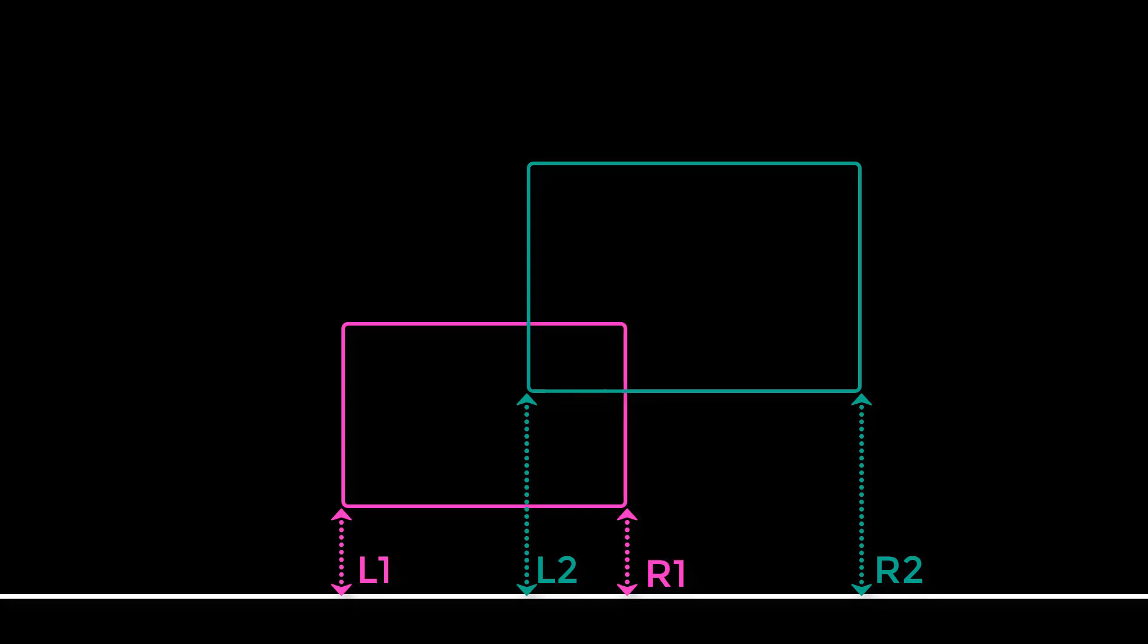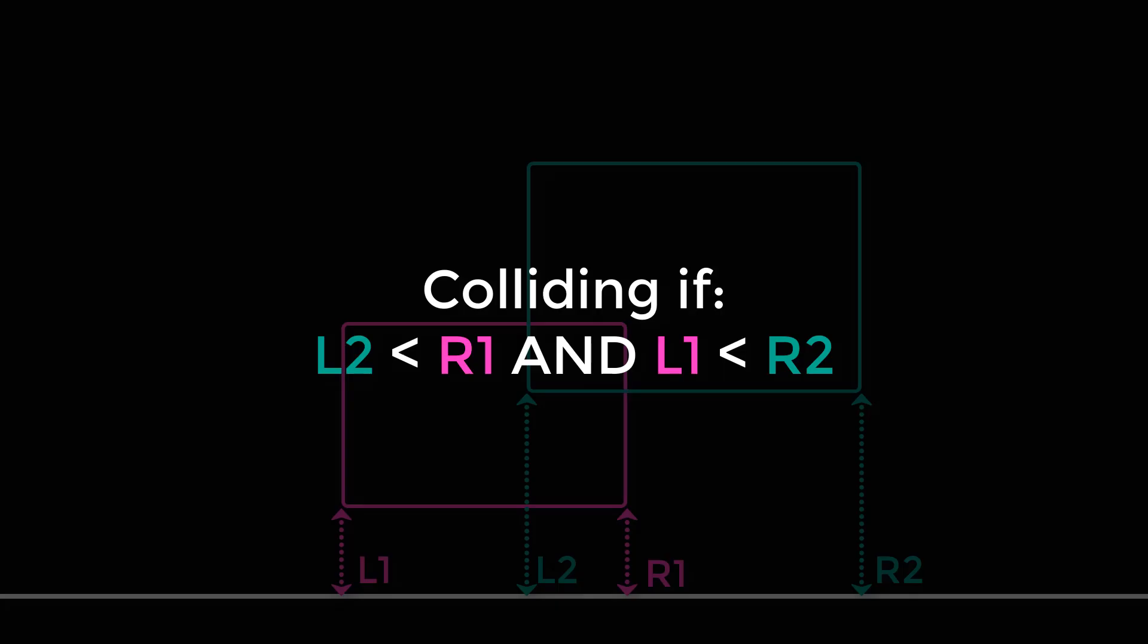And if you do that, there's a really simple formula that you can use to determine whether these boxes are overlapping on the x-axis. These boxes are colliding if L2 is less than R1, and L1 is less than R2. So pause the video and let that sink in.